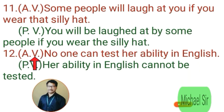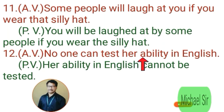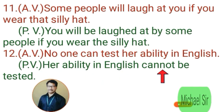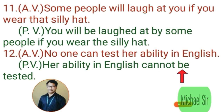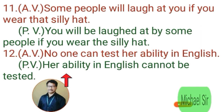Twelfth example. Active voice: 'No one can taste her ability in English.' 'No one' is subject and 'her ability' is object. When we make passive voice, 'her ability' becomes subject. Since 'no one' makes it a negative sentence, we have to make it negative in passive voice too — using 'cannot be,' then the third form 'tested.' Since 'no one' is an unimportant subject, it is omitted. Passive: 'Her ability in English cannot be tested.'